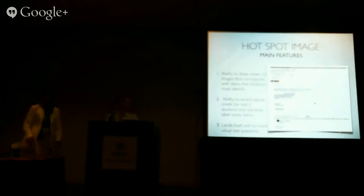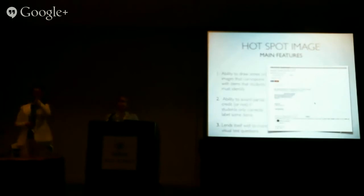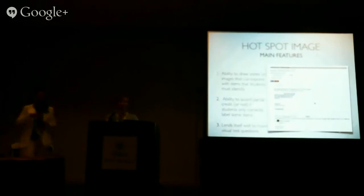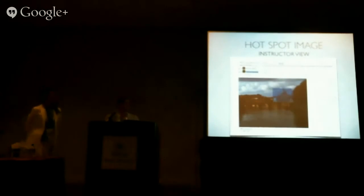This question type can award partial credit or not. Depending on the number of points assigned to the question, it divvies those up by the number of items. If students get one right, they get partial credit; if you choose not to give partial credit and they miss one, they get zero. It lends itself well to visual tasks — for example, professors have been interested in things like labeling anatomy, like identifying where the spleen is. You upload the hotspot image, and one issue we've run into is that the attachment button appears directly below, leading to confusion — people think adding an attachment is adding the hotspot image, which is not the case.